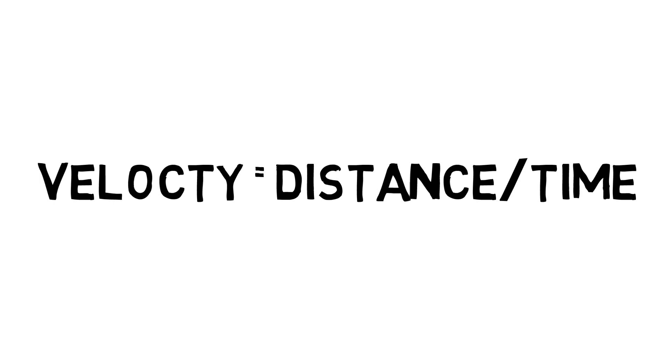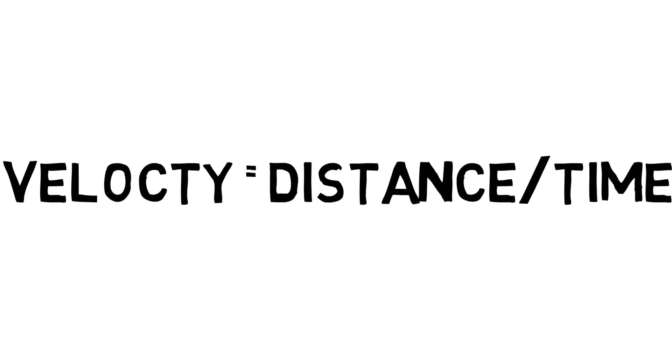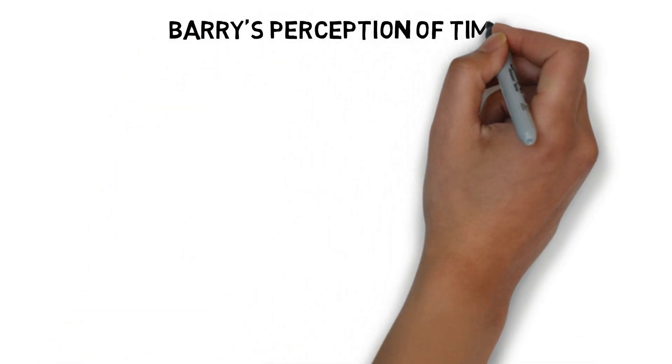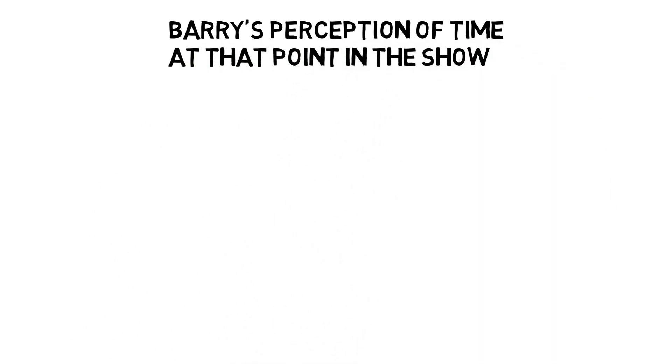In order to find his speed, we need to use the formula velocity equals distance divided by time. Let's do time first because it's actually the easier one to find here. Like in my video covering Savitar, we need to find Barry's perception of time at that point in time of the show.